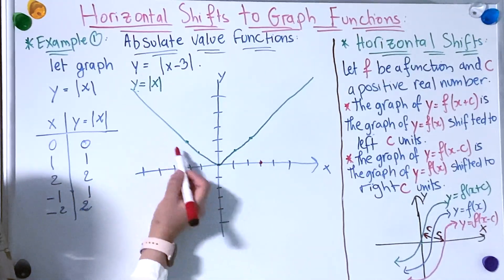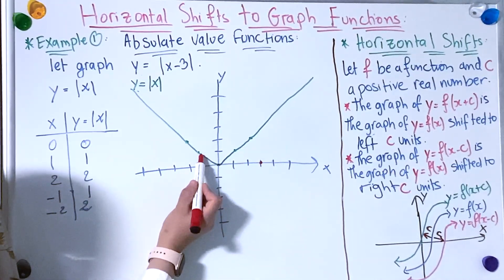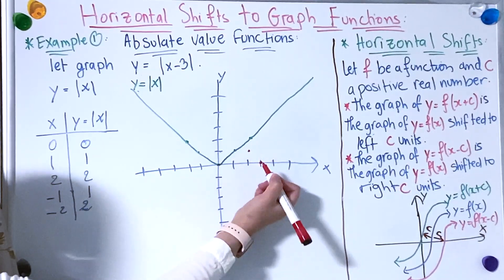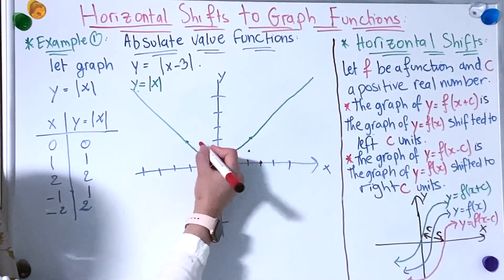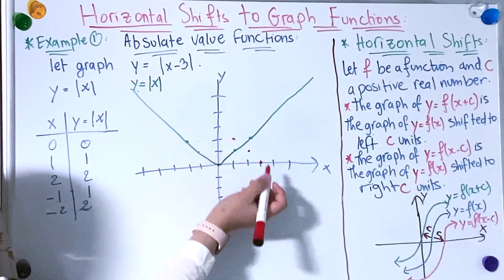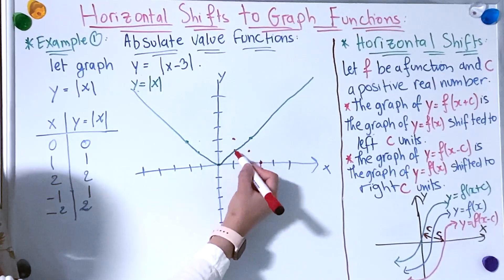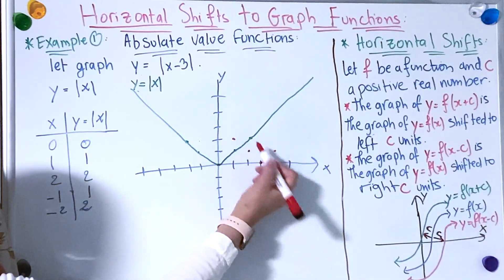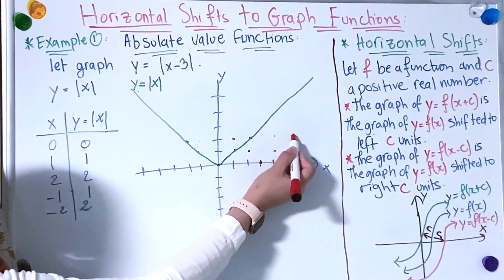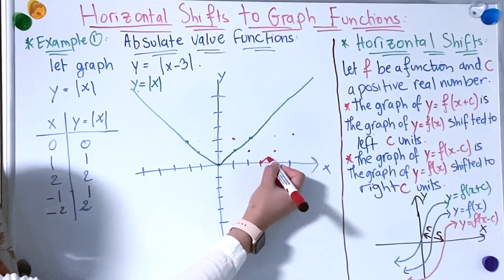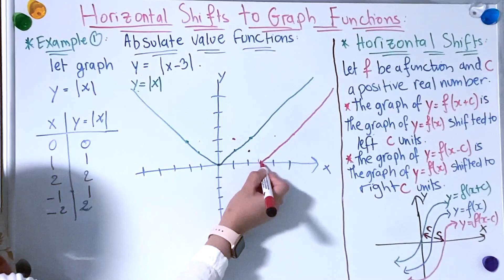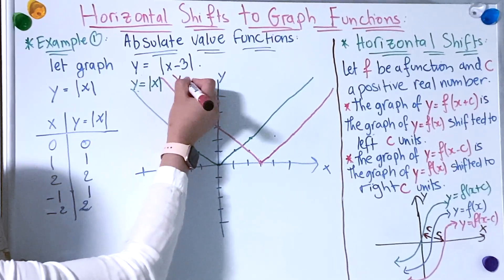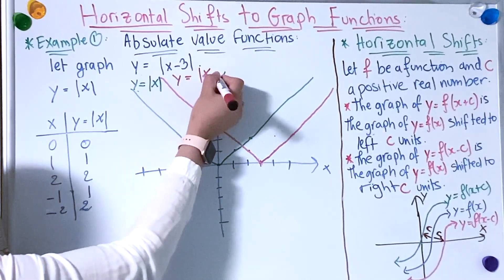Then I'm going to shift the other points. I have −1: shift 1, 2, 3. And −2: shift 1, 2, 3. Then on the other side, I have 1: shift 1, 2, 3. And 2: shift 1, 2, 3. Now I'm going to connect the points I found. And now I have y = |x − 3|.